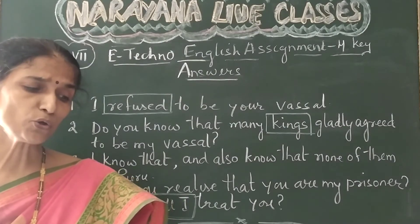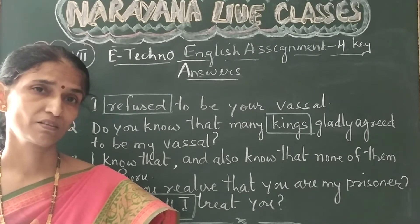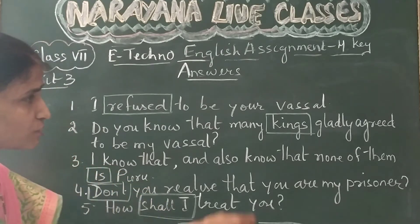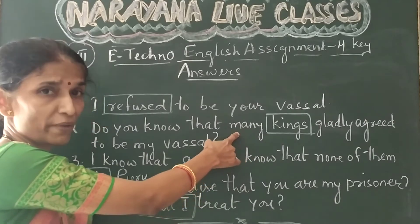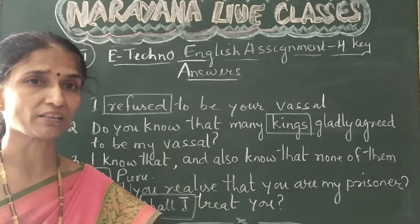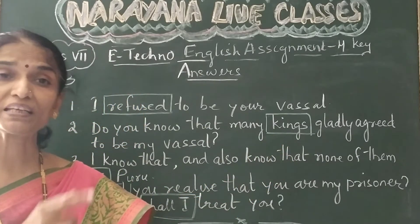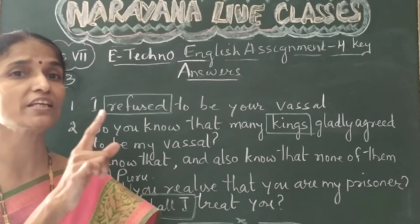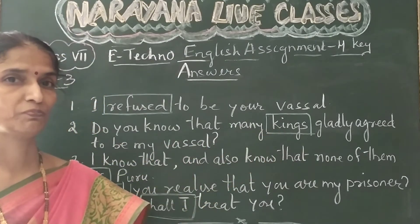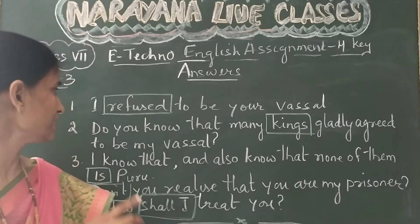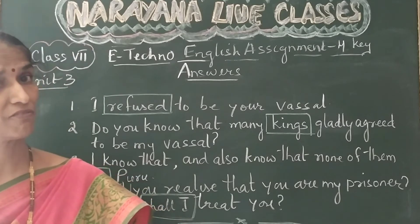Then: 'Do you know that many kings have gladly agreed to be my passive?' The mistake is with the noun here, because the adjective before the noun is 'many.' Many means more than one, and when we have more than one, the following noun should be plural. But in the given sentence we are given the singular noun 'king,' so it should be replaced with the plural noun. The corrected sentence is: 'Do you know that many kings have gladly agreed to be my vassal?'